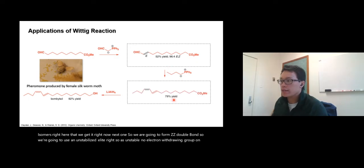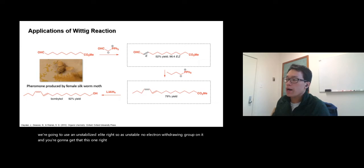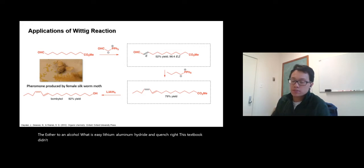Lastly we have to reduce the ester to an alcohol. What is it? Lithium aluminum hydride and then quench. This textbook didn't show quench because they expect that you already know it, but yeah, so first step add lithium aluminum hydride, second step you quench at the end and you get the product right there.